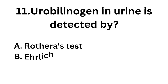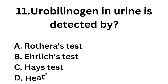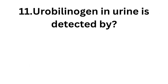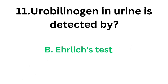Question number eleven: urobilinogen in urine is detected by — option A: Rothera's test, option B: Ehrlich test, option C: Hayes test, option D: Heats test. The correct answer is option B, Ehrlich test. Ehrlich test is used for the detection of urobilinogen in urine.